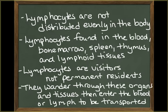The various lymphocytes are not evenly distributed throughout the body. For example, T cells outnumber B cells by a ratio of 8 to 1. Lymphocytes can be found in the blood, the bone marrow, the spleen, the thymus, and the peripheral lymphoid tissues. The lymphocytes in these places are visitors, not permanent residents. All three types of lymphocytes wander through the tissues, then enter blood vessels or lymphatic vessels for transport.